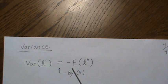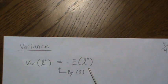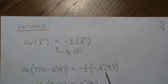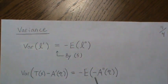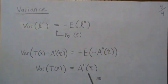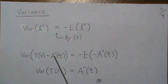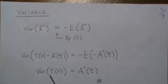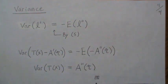Now for the variance. By our earlier result, Var(L') = -E[L'']. We substitute: L' = T(x) - a'(eta) and L'' = -a''(eta). Since a''(eta) has no X in it, the expected value just returns a''(eta), and the minus signs cancel. The variance: since adding a constant doesn't affect variance, Var(T(x) - a'(eta)) = Var(T(x)), which equals a''(eta). The variance of the sufficient statistic is the second derivative of the log partition.